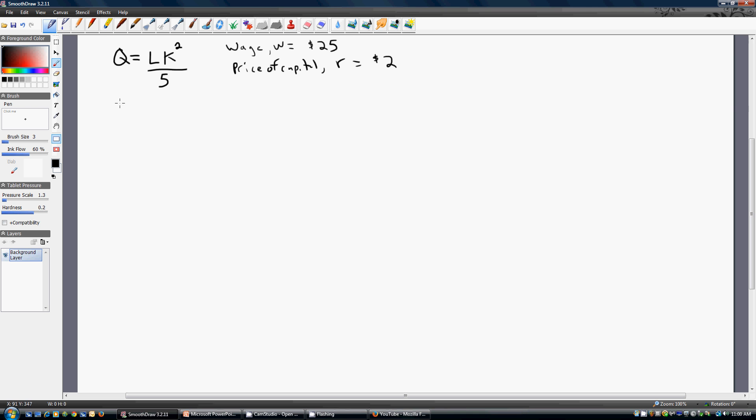First step, take the production function and solve for L. So we're going to solve this production function for L. We're going to multiply it through by 5, and we're going to divide through by K squared. So this is an important first step for us. We're going to be coming back to this in a minute.